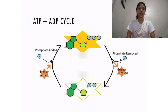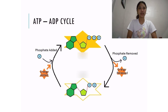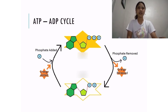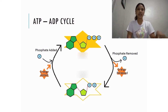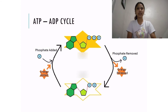Now I will explain the ATP to ADP cycle using this illustration. On the upper part, we have ATP or adenosine triphosphate, which has three phosphate groups. In order to convert ATP to ADP, we need to release one inorganic phosphate and we will also release energy. This is called an exergonic reaction. After that, we get ADP.